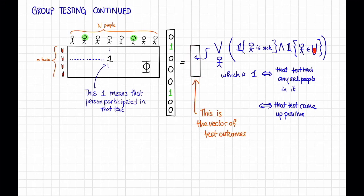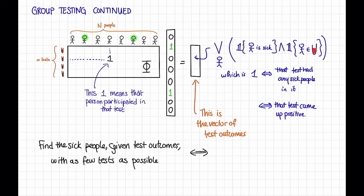What that means is that if our goal is to find the sick people given the test outcomes with as few tests as possible, that's the same as finding x given phi times x with m as small as possible.